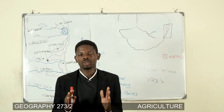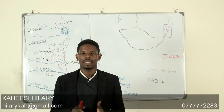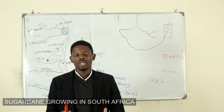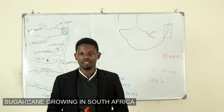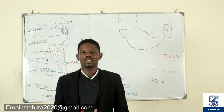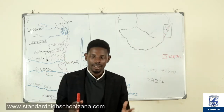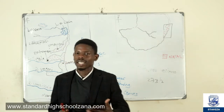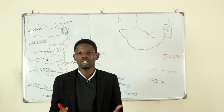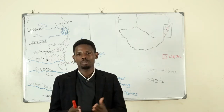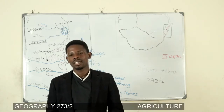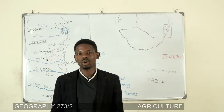We are going to talk about agriculture in Africa. To be specific, we are going to see sugarcane growing in South Africa. Remember, we will see what is grown, where it is grown, factors favoring the growing of that particular crop, the benefits or contributions, the importance of growing that crop, the problems faced by the farmers, and how we can solve those problems.